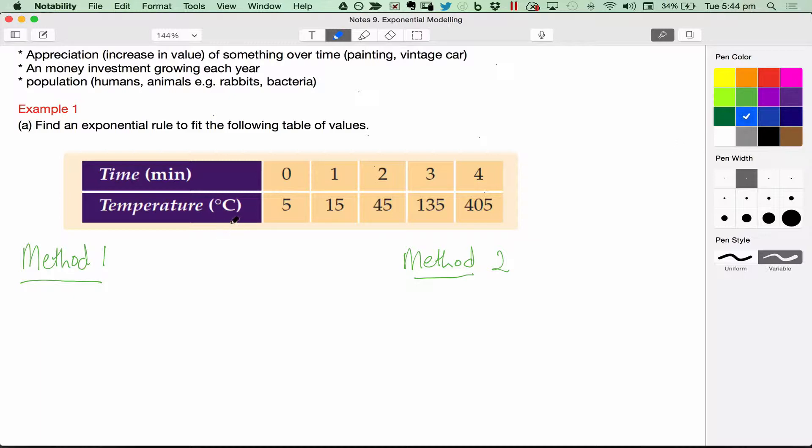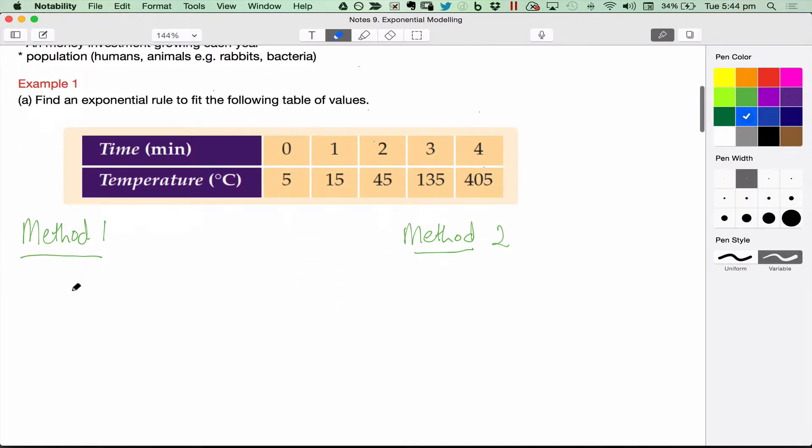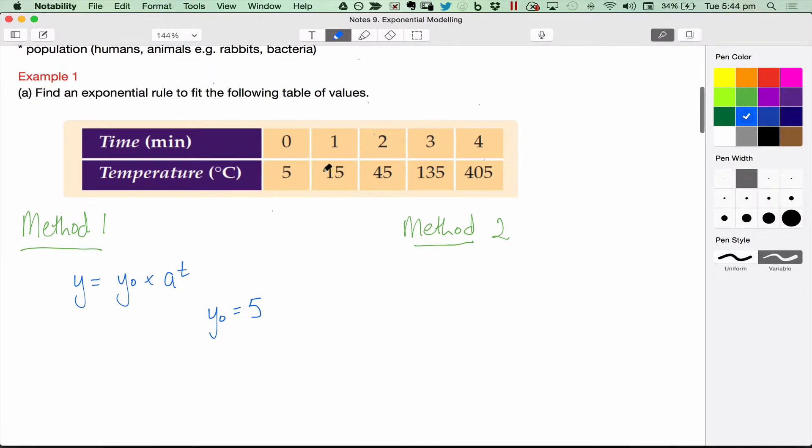Secondly, what was our formula up here? y equals y0 times a to the t. And our initial value, which is y0, is, so at time 0, our initial value is 5. Our growth factor, which is a, is going to be this second y value divided by the first one. 15 divided by 5, which is 3.